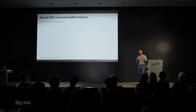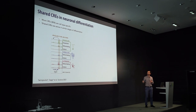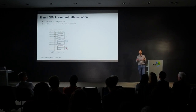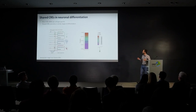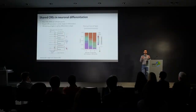This begs the question: do we also have CREs shared across neuron types during differentiation? Most CREs in the dataset are cell-type specific, with the same target gene activated by different regulatory elements in different neuron types. However, we did find some shared between neuron types, and interestingly these are typically active in similar stages of differentiation. For example, a CRE accessible in granule progenitors, differentiating Purkinje cells, and differentiating interneurons, with accessibility decreasing in mature neurons of all three — suggesting a shared role in differentiation programs.